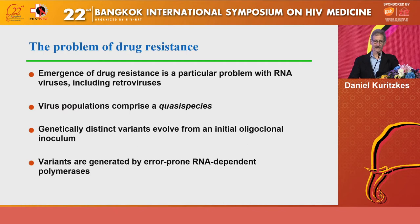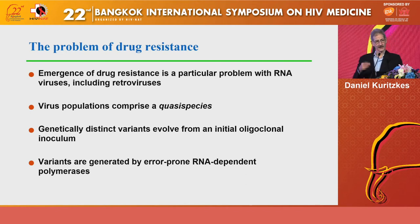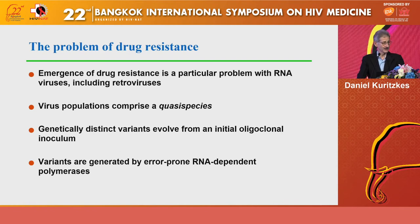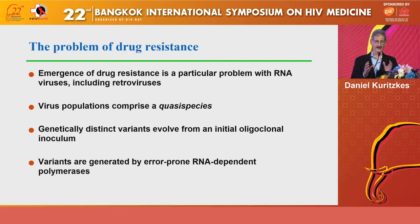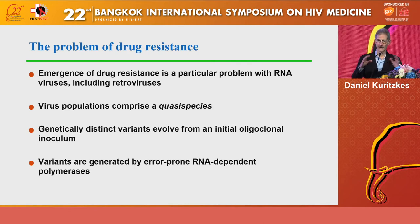Unlike antimicrobial resistance, where we see the spread in the environment through the use of antibiotics in animal feed and the nosocomial acquisition of drug-resistant microorganisms, emergence of drug resistance in HIV occurs really de novo in each treated person when treatment doesn't go right. The emergence of resistance is a particular problem with RNA viruses, not limited to HIV but also seen with influenza and hepatitis C virus, including retroviruses. It's important to remember that in an infected individual, the virus population is not homogenous or clonal — it really represents a quasi-species.